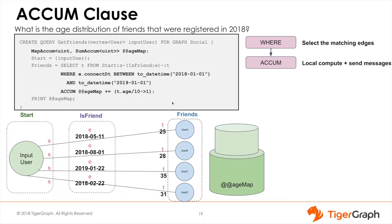In the ACCUM clause we update the value of the map ACCUM, which we have named age_map. The key is the age of the target vertex divided by 10 and the value is 1. This effectively adds one count to the number of occurrences at each age decade. In the ACCUM clause we can see the edges send a message — in our case a key-value pair — to the accumulator's bucket.